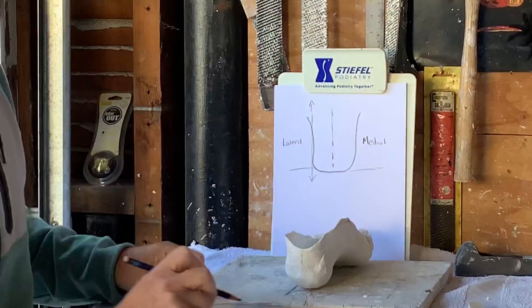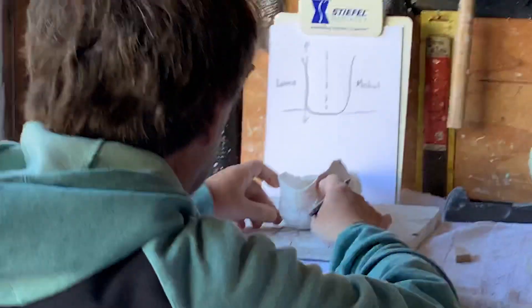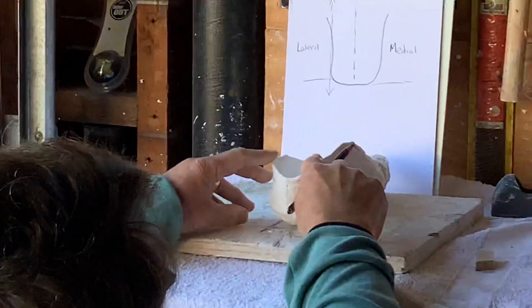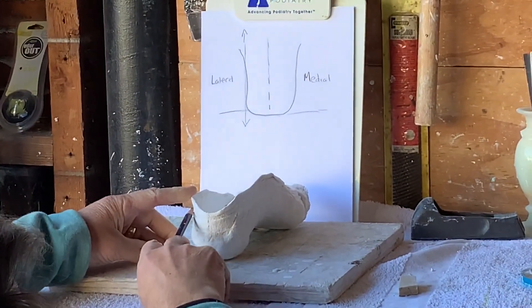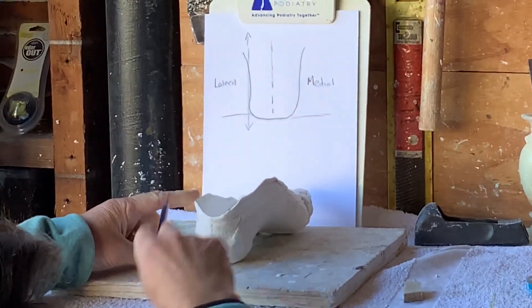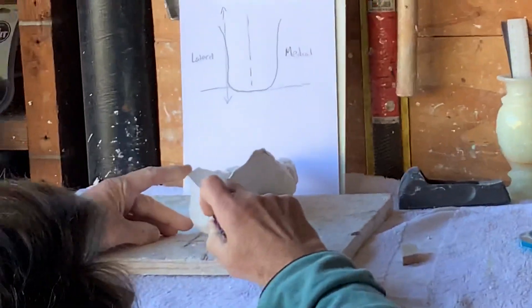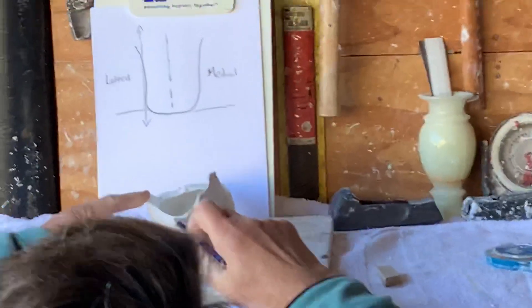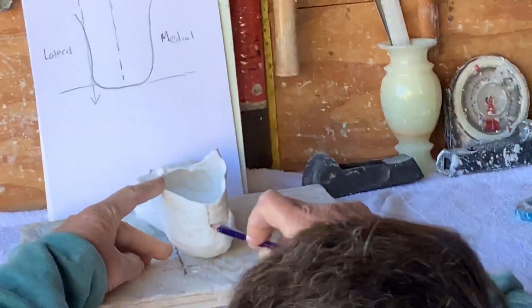Then we're going to put that curve where it's straight up and down and then represent that curve by a heel bisection.